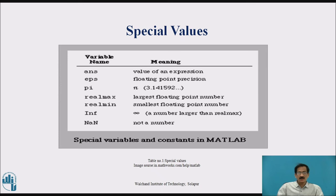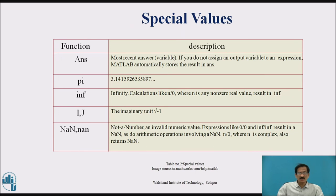These are the special values in MATLAB. 'ans' stores the value of an expression — if we don't assign a variable to an output, MATLAB provides the result as 'ans ='. 'eps' is floating-point precision. 'pi' gives the value of pi, that is 3.14. 'realmax' is the largest floating-point number. 'realmin' is the smallest floating-point number. 'Inf' is a number larger than realmax. 'NaN' means not a number. 'i' and 'j' represent the imaginary unit, that is the square root of minus 1.